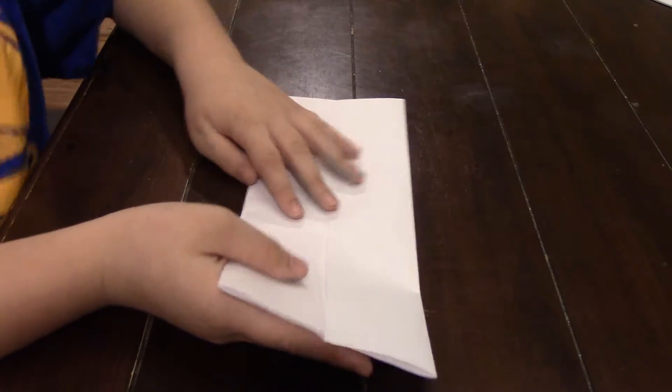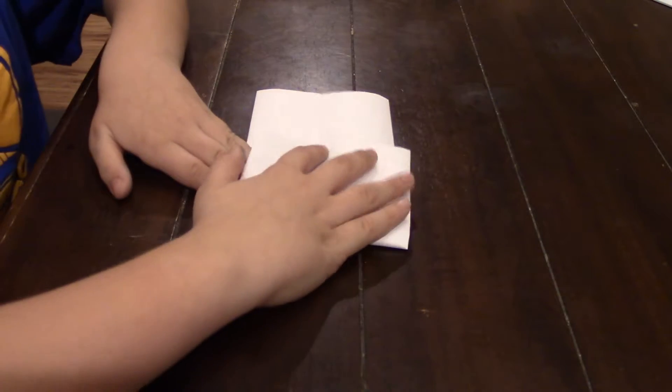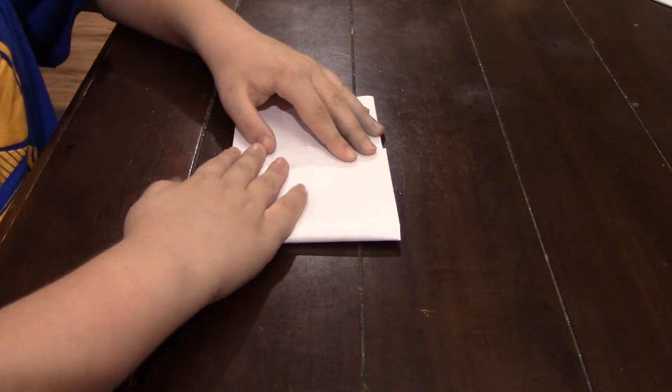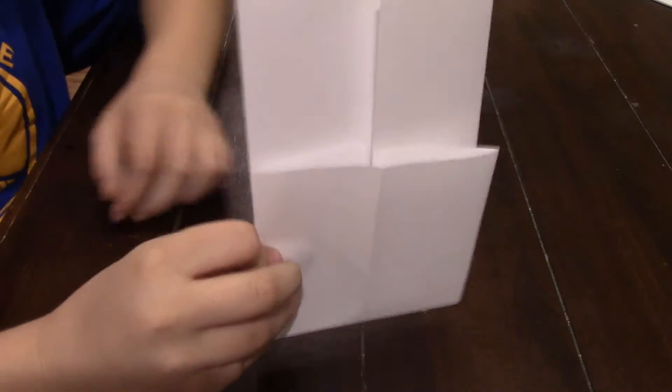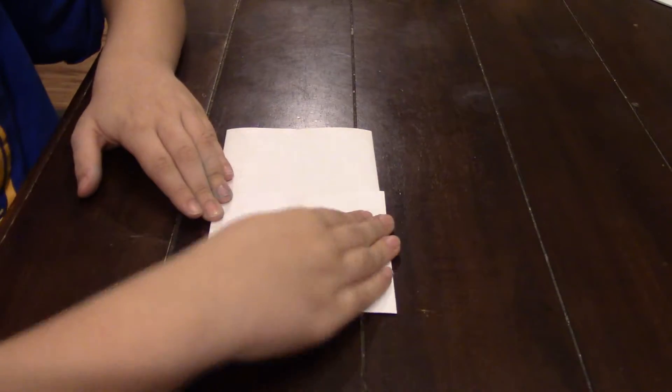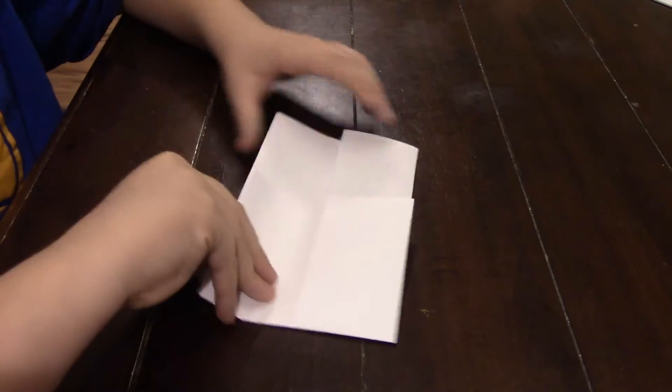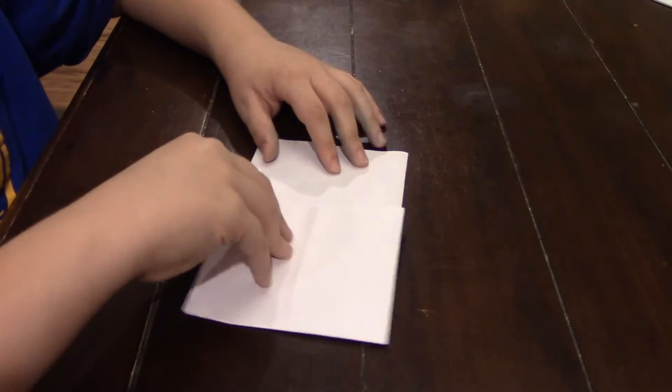And now you're just going to fold it up to about there, so that this is his ball and this is his head. But we want to make the head a little smaller.